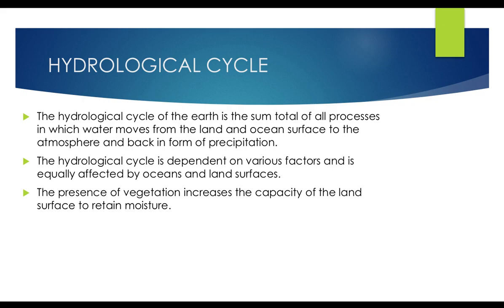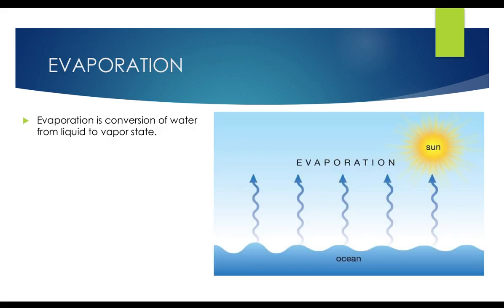Let's see the definitions, because in this chapter definitions are very important and may come in the exam. The hydrological cycle of the Earth is the sum total of all processes in which water moves from land and ocean surface to the atmosphere and back in the form of precipitation. There are different factors on which it depends, like oceans, land surface, vegetation, and more.